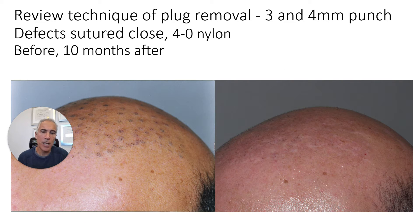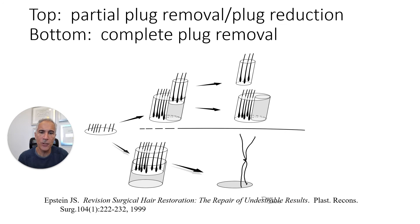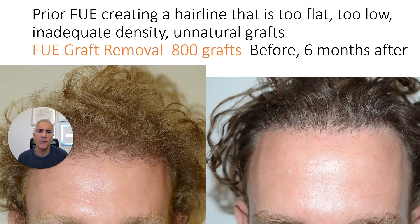This is a plug removal case before and after, using three and four millimeter punches, sutured closed with 4-0 nylon, before and 10 months after. This is a reprint of an illustration from Plastic and Reconstructive Surgery. On the bottom is the removal of the entire plug and suturing it closed. On the top is an illustration of FUE or plug reduction, where I'm removing a portion of the plug to reduce its volume.